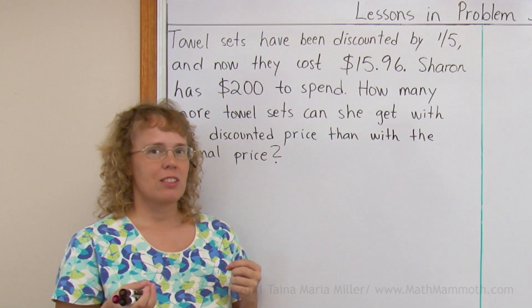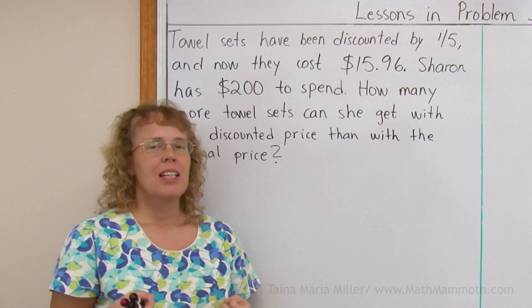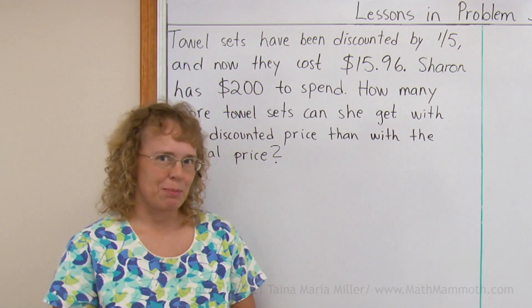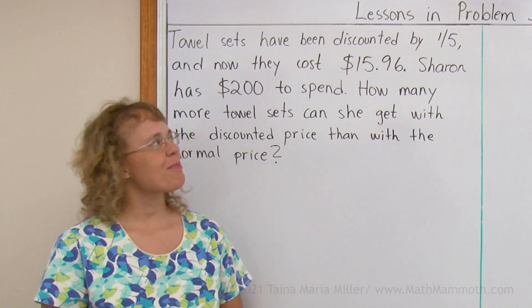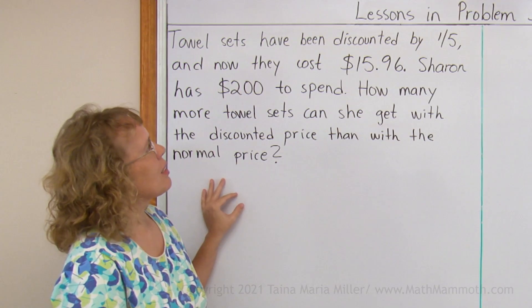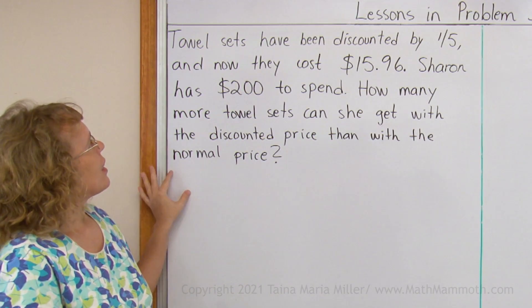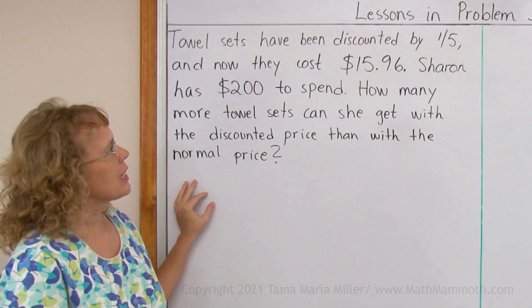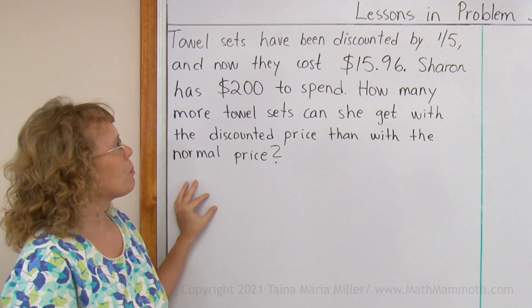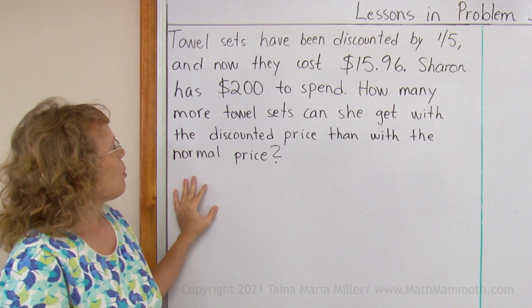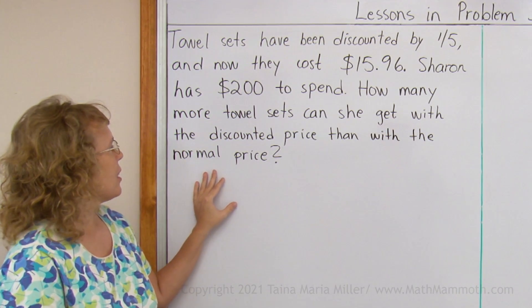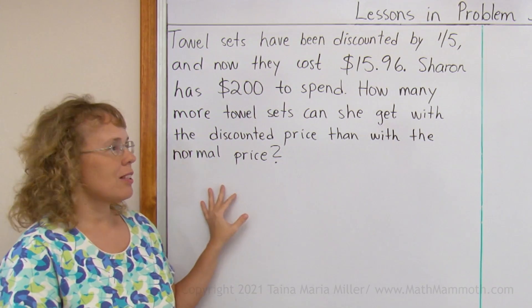It's not going to be solved just quickly and easily. Just like in real life, sometimes we have problems that take many steps and some thinking. Tile sets have been discounted by one-fifth, and now they cost $15.96. Sharon has $200 to spend. How many more tile sets can she get with the discounted price than with the normal price?